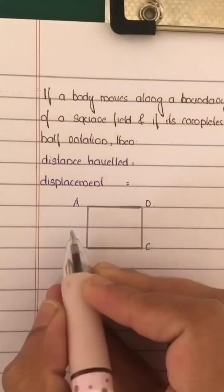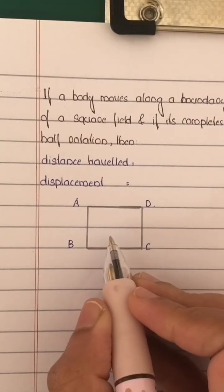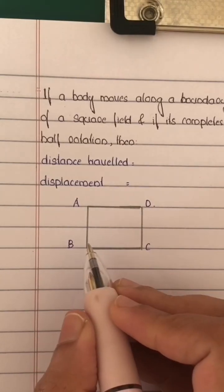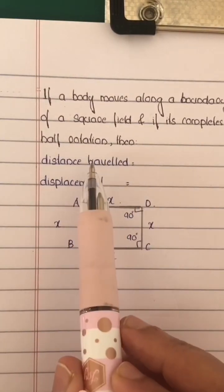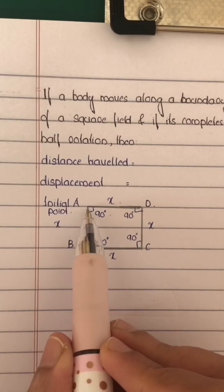Now consider a square field and mark it as A, B, C, D. Since it's a square, all sides are equal and angles will be 90 degrees. The body completes half rotation. Let us assume the body starts at point A.